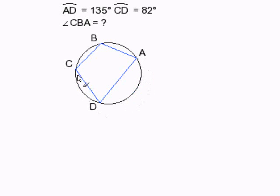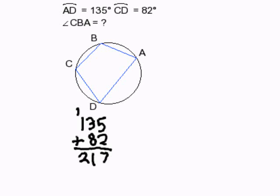So the first thing we need to do is find out this whole thing here. To find this whole thing, we need to add up 135 and 82. So let's go ahead and do that. 135 plus 82, and we get 217 degrees.